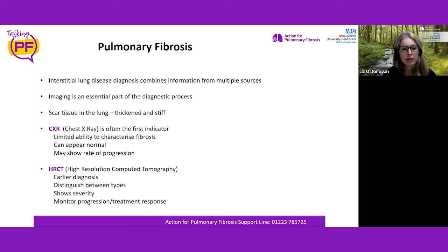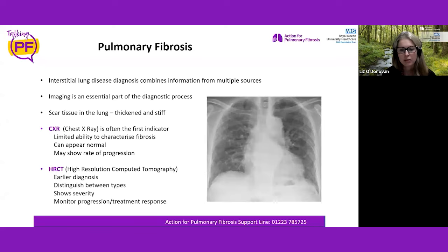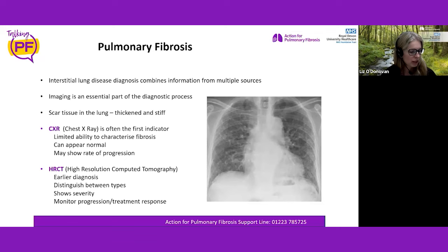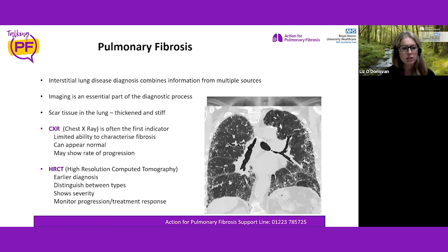A chest X-ray may be the first indicator of abnormality. Usually the lungs either side of the heart are quite black, but this one has lots of busy lines all over it, suggesting an interstitial fibrotic process. However, it's very difficult to characterise further from a chest X-ray, and they can appear completely normal even with a mild process.